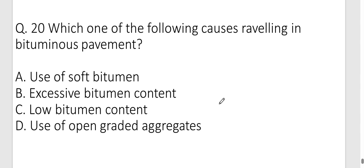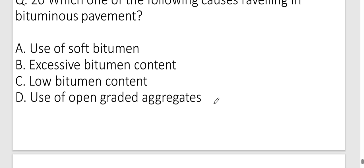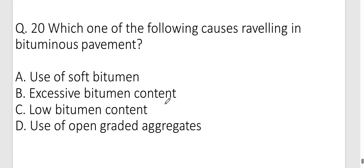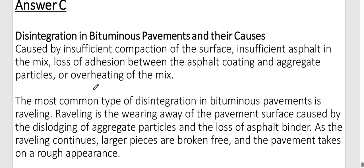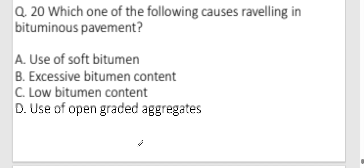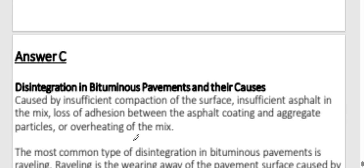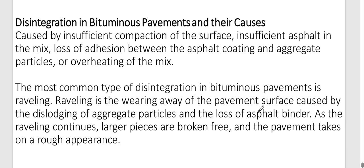Question nineteen: What causes ravelling in bituminous pavement? Ravelling is the disintegration of the bituminous pavement — wearing away of the pavement surface caused by dislodging of aggregate particles and loss of asphalt binder. It is caused by insufficient compaction, loss of adhesion between the asphalt coating and aggregate particles, and overheating of the mix. As ravelling continues, larger pieces break free and the pavement becomes rough. This concludes the MCQ session on Highway Engineering. Please like the video and subscribe to the channel.